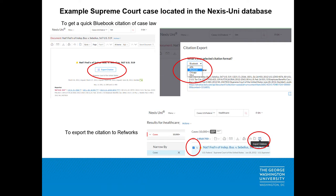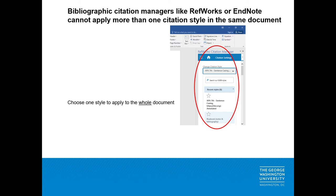The Nexus Uni database has an instant Blue Book citation feature. You can search for case law and each record has an export citation button. When you click, you can select Blue Book as one of the styles and copy and paste the citation into a text editor such as Notepad. Using a bibliographic citation manager like RefWorks would apply the citation style selected to the whole document. You can't tell RefWorks to automatically apply more than one citation style — for example both APA and Blue Book — so I recommend keeping it to APA 7th edition.